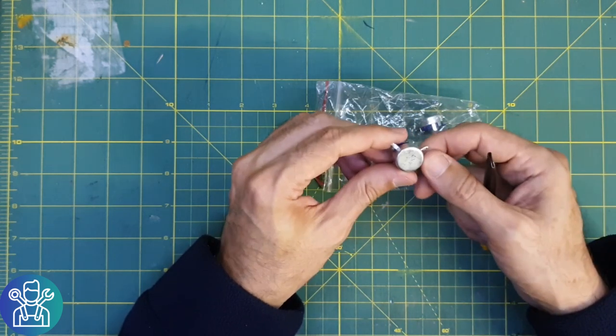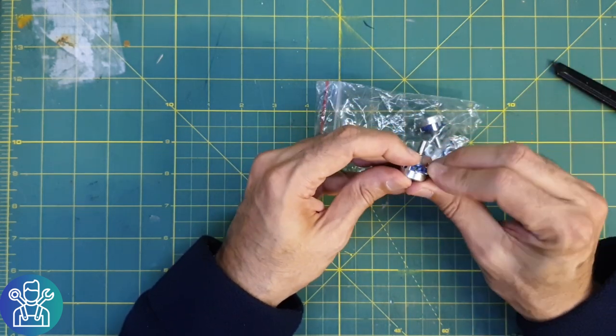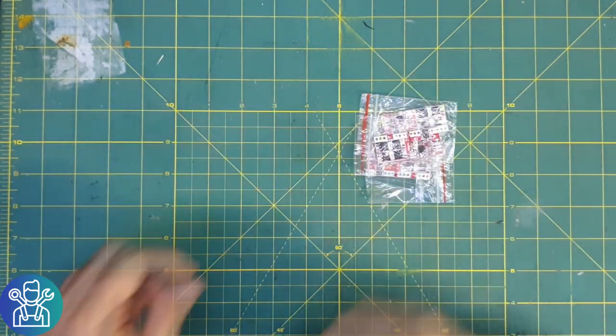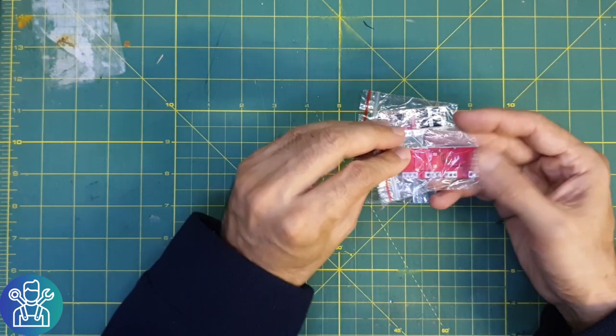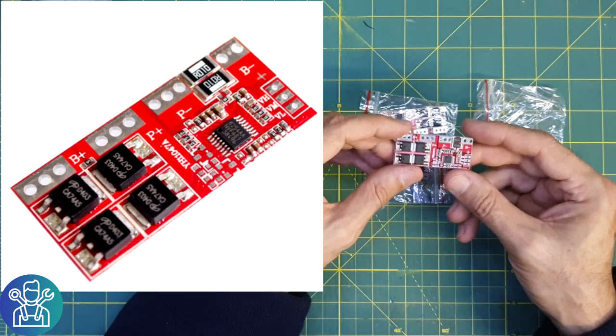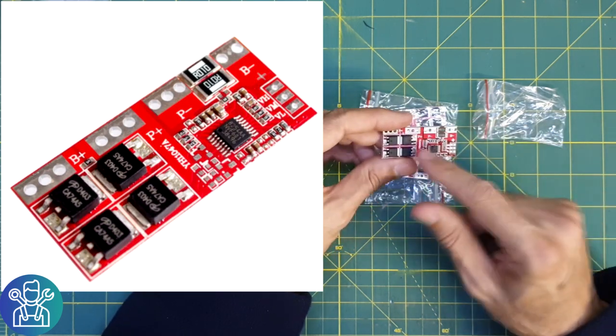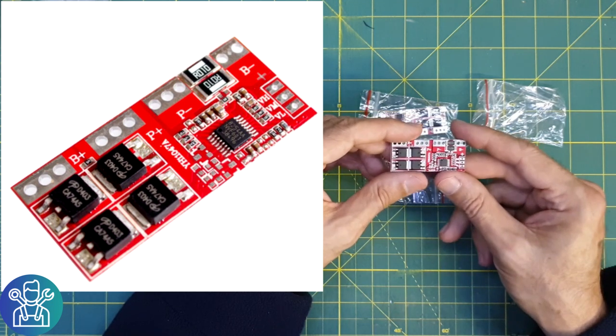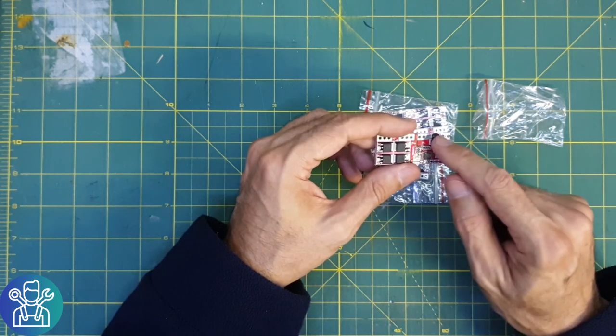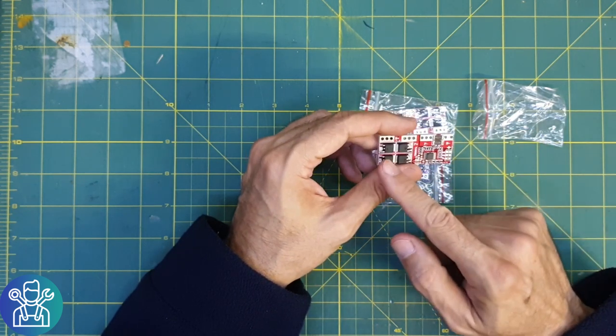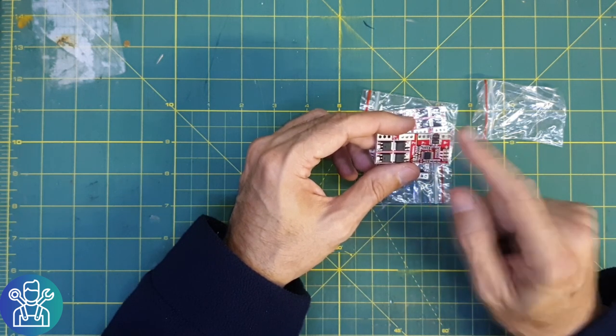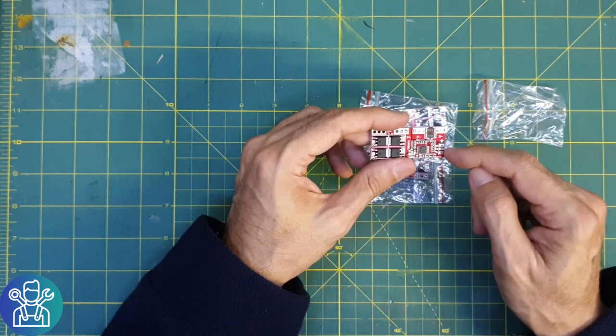Another small package, these are 4S battery protection boards. Those are MOSFETs and I don't know what this is, it's rubbed off. There is the resistors. There is battery plus, battery minus, positive plus, positive positive minus, and those are the battery connections.